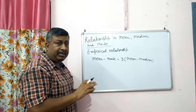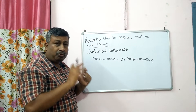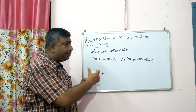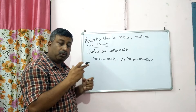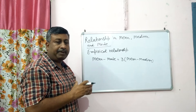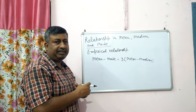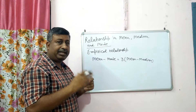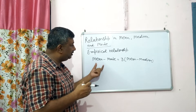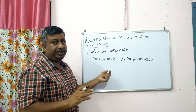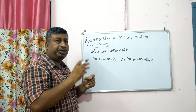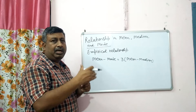You can understand that in an empirical relationship, there is no mathematical basis. We have some observations, we have some experiments on which we take the base, but we do not take the true value. So this is the empirical relationship — not a true mathematical relationship.